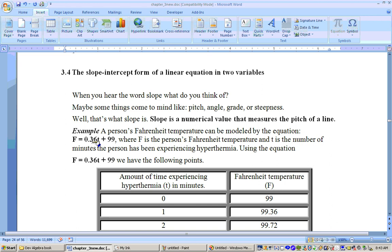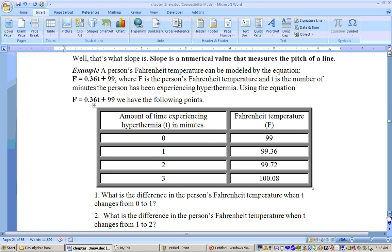Well, when you put 2 in for T, 2 times 0.36 is an additional 0.36, or 0.72. 2 times 0.36 is 0.72, plus 99 is 99.72. And you could do that for more X values, and what you realize is that's how much it's going up by for every unit on the X-axis.